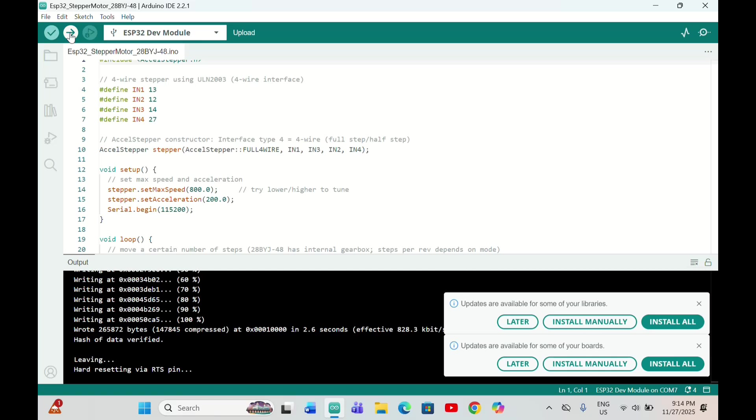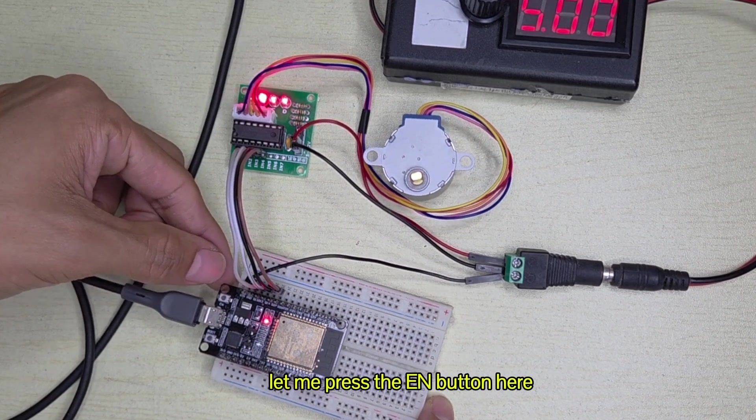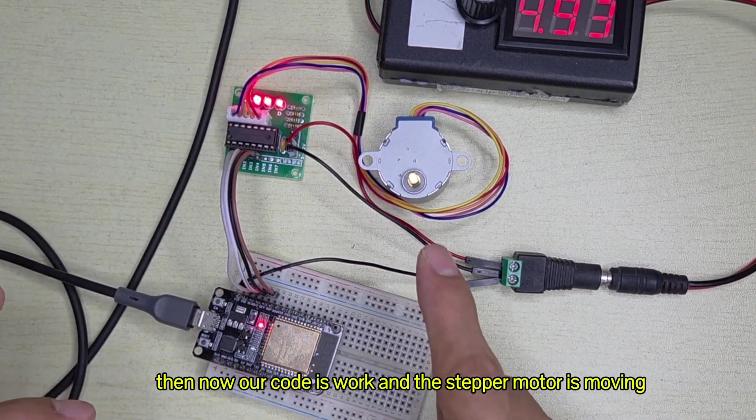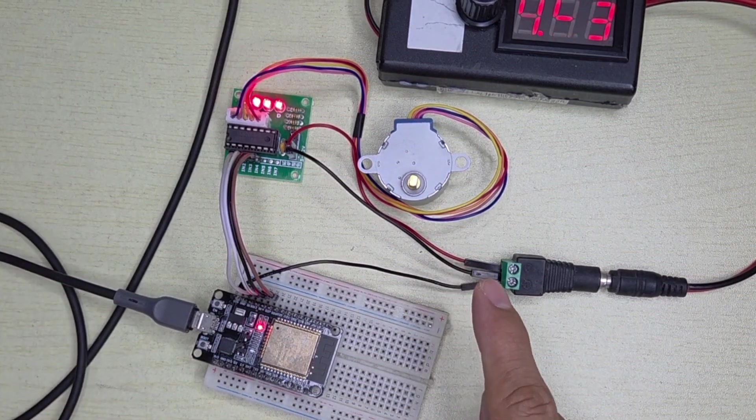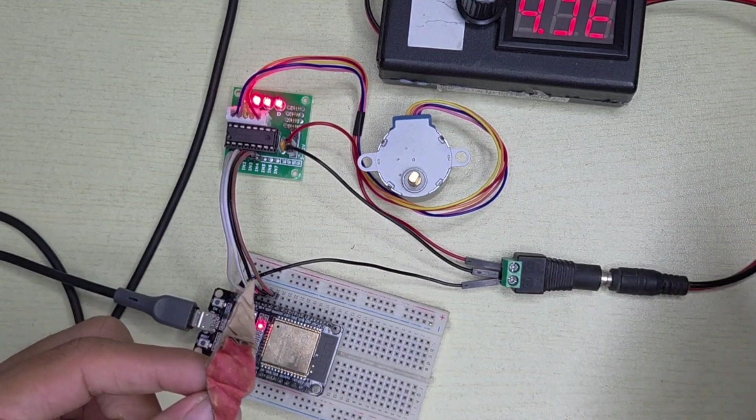All right, so now done uploading the code. Let me press the EN button here. Now our code is working and the stepper motor is moving. Let me turn it off first.